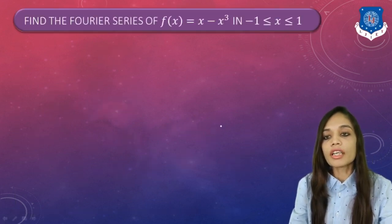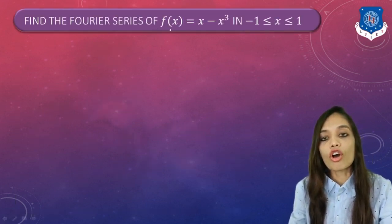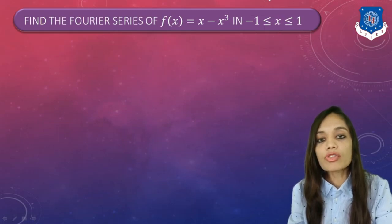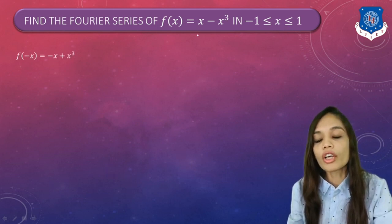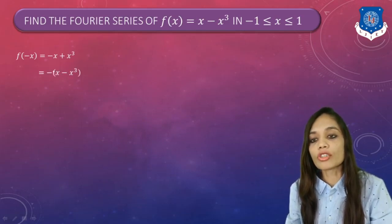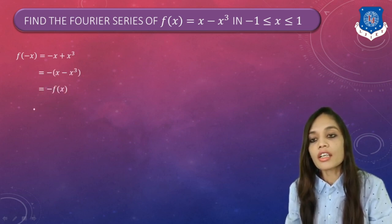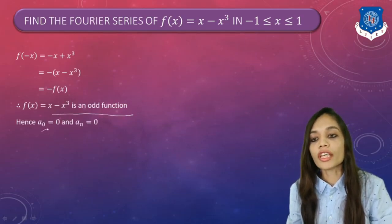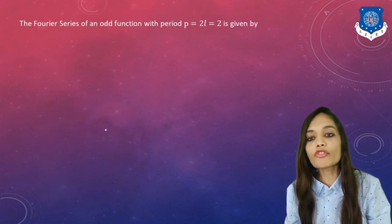Now let us go to the next example: find the Fourier series of f(x) = x − x³ in the interval (−1, 1). Here the interval is also symmetric. We check even or odd by replacing x by −x: f(−x) = −x + x³ = −(x − x³) = −f(x). Therefore the given function is an odd function, so A0 and An = 0, and we only need to find Bn.